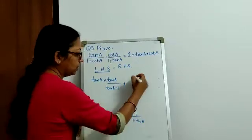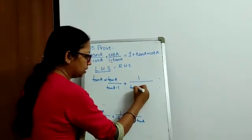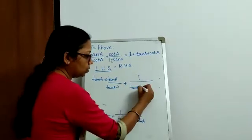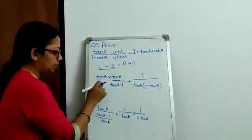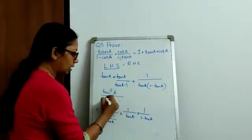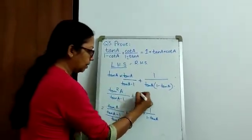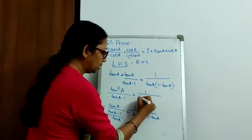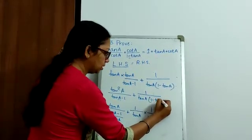So, and this term, we simply multiply and we get the whole expression as tan A into tan A becomes tan square A and the denominator is tan A minus 1 plus 1 by tan A into 1 minus tan A.